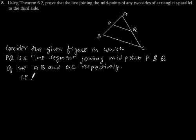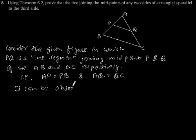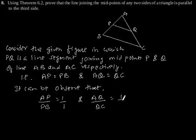That is, AP is equal to PB and AQ is equal to QC. It can be observed that AP by PB is equal to 1 by 1 and AQ by QC is also equal to 1 by 1.